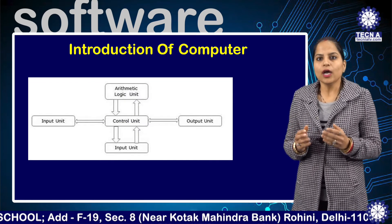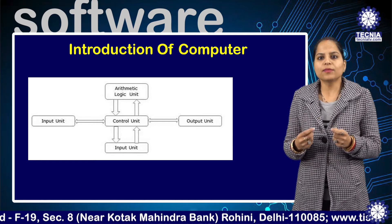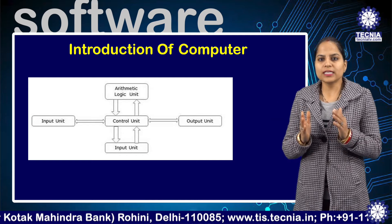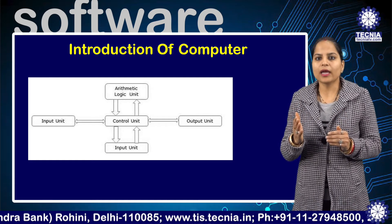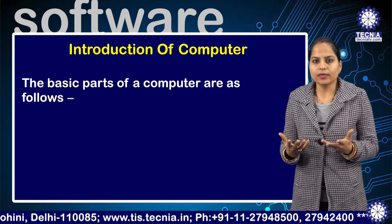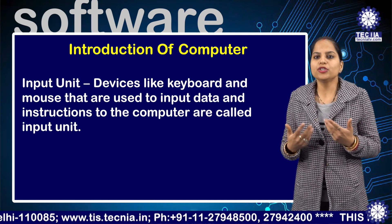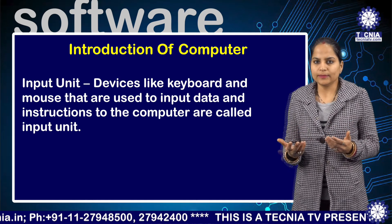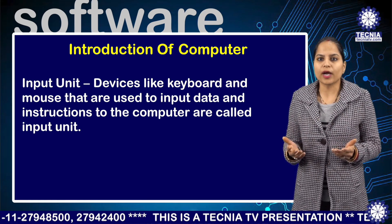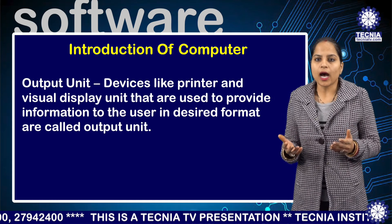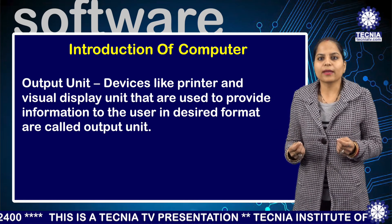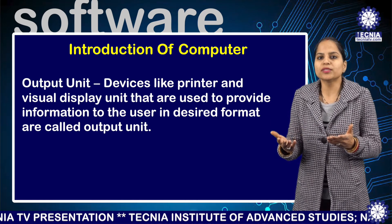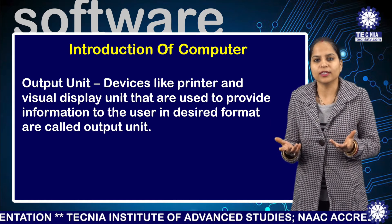The corresponding figure for an actual computer looks something like this: input, CU, and output. The CU is attached with the ALU and storage. The basic parts of a computer are as follows — input unit, devices like keyboard and mouse; output unit, devices like printer and visual display unit that are used to provide information to the user in the desired format, which are called output devices.